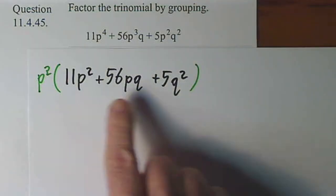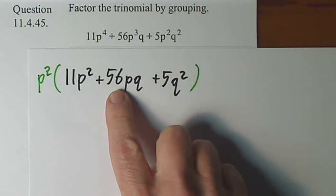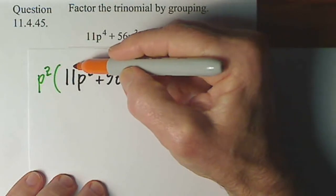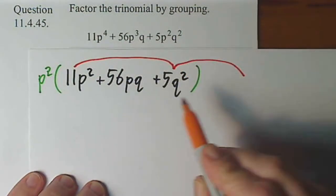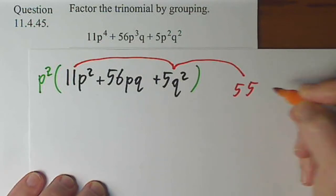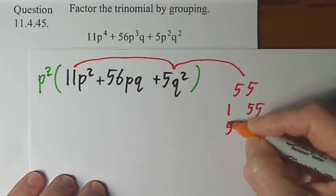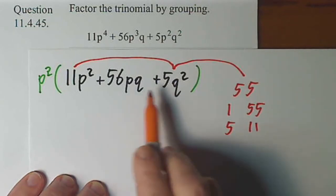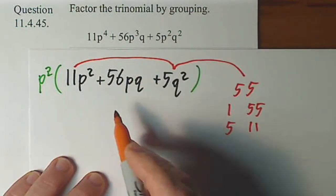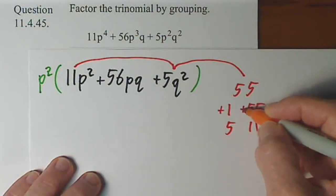Now to factor by grouping, you really need four terms. You only have three. So we're going to have to find a way to break up this 56. I'm going to multiply the first term times the last term, and I'm really just going to pay attention to the coefficient. That would give me 55. List all the factors of 55: 1 and 55, and then 5 and 11. All our signs are positive, so these are both going to be positive terms. I'm looking for a sum of 56. So a positive 1 and a positive 55 would give me that.